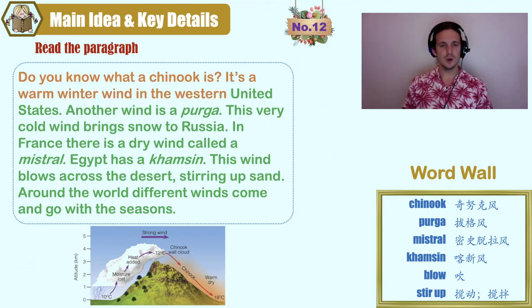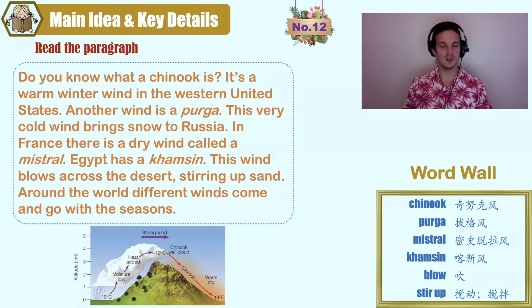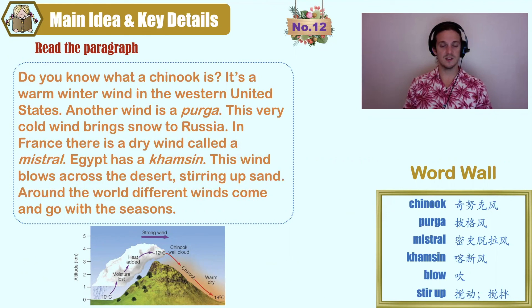Do you know what a chinook is? It's a warm winter wind in the western United States. Another wind is a purga — this very cold wind brings snow to Russia. In France there is a dry wind called a mistral. Egypt has a camzin — this wind blows across the desert, stirring up sand. Around the world, different winds come and go with the seasons.